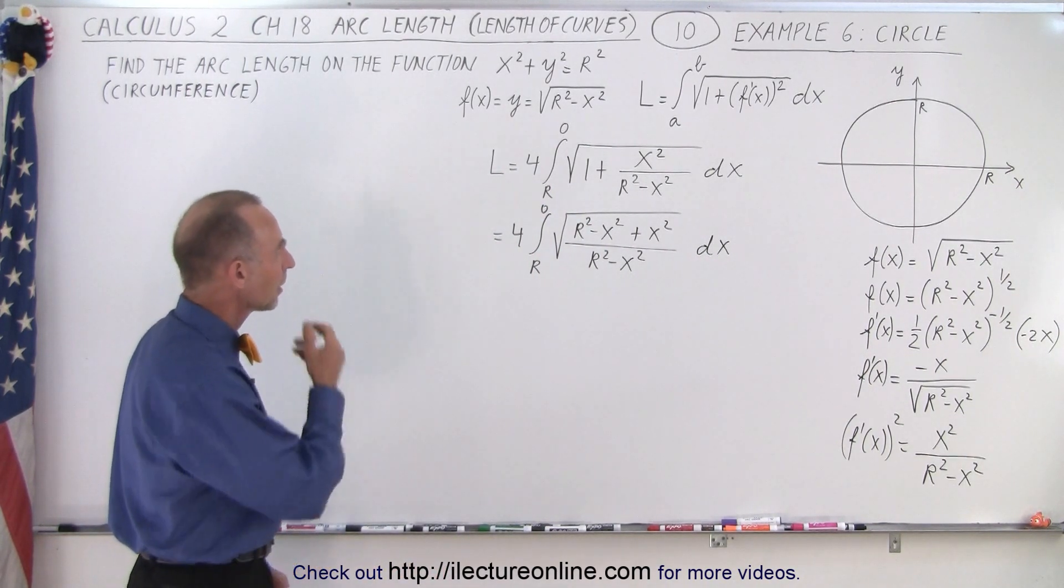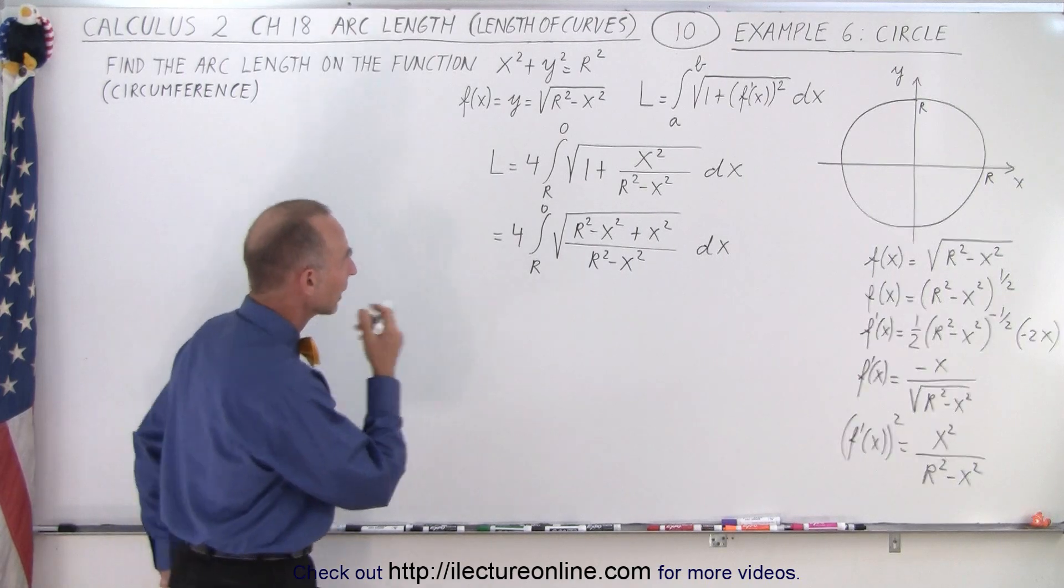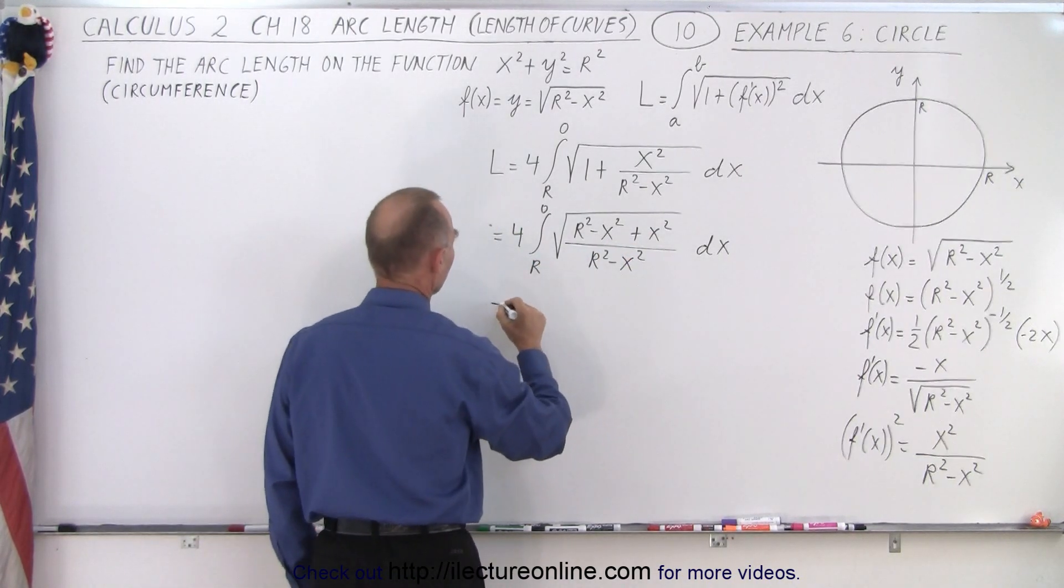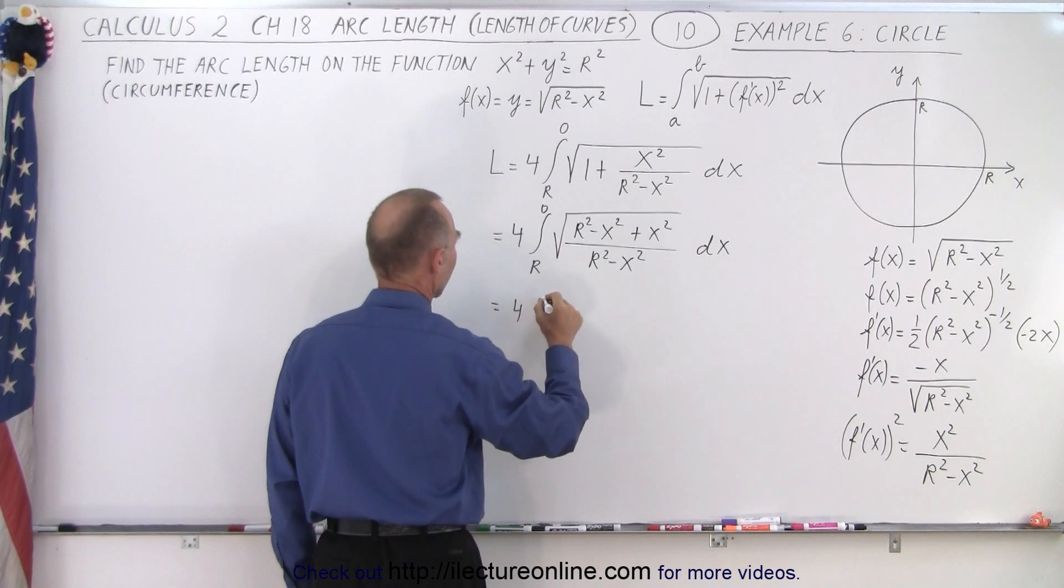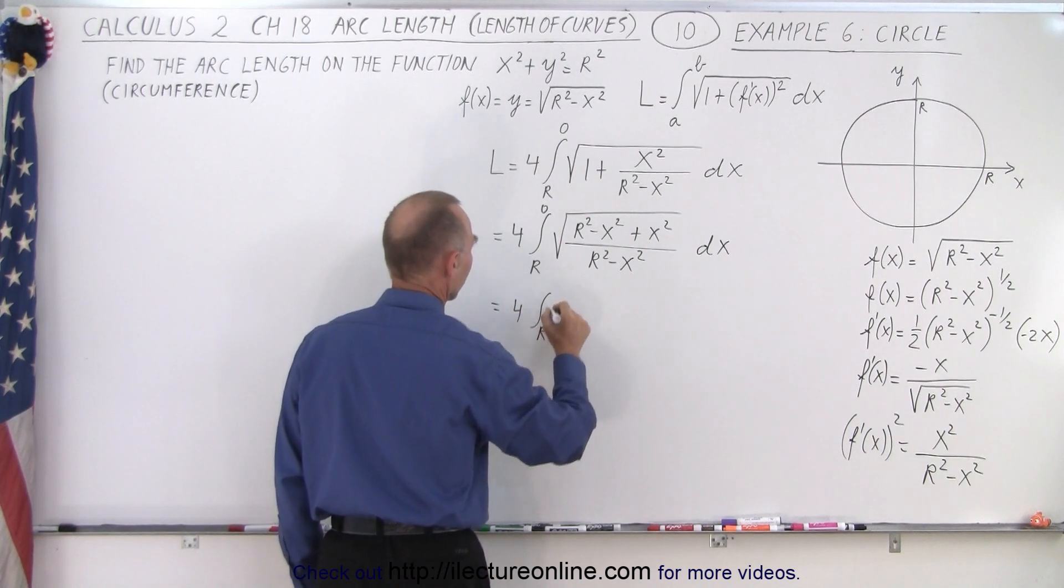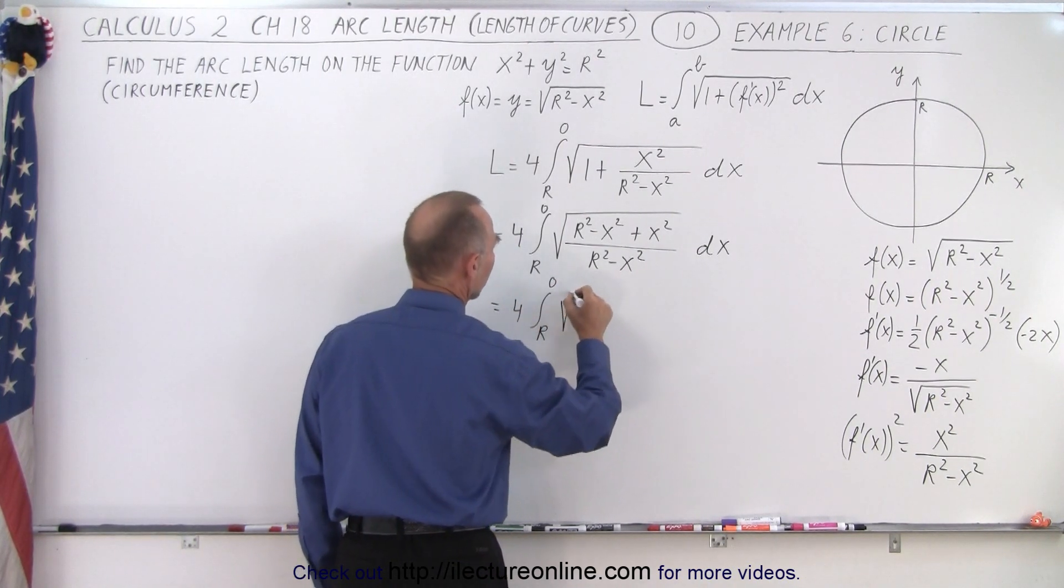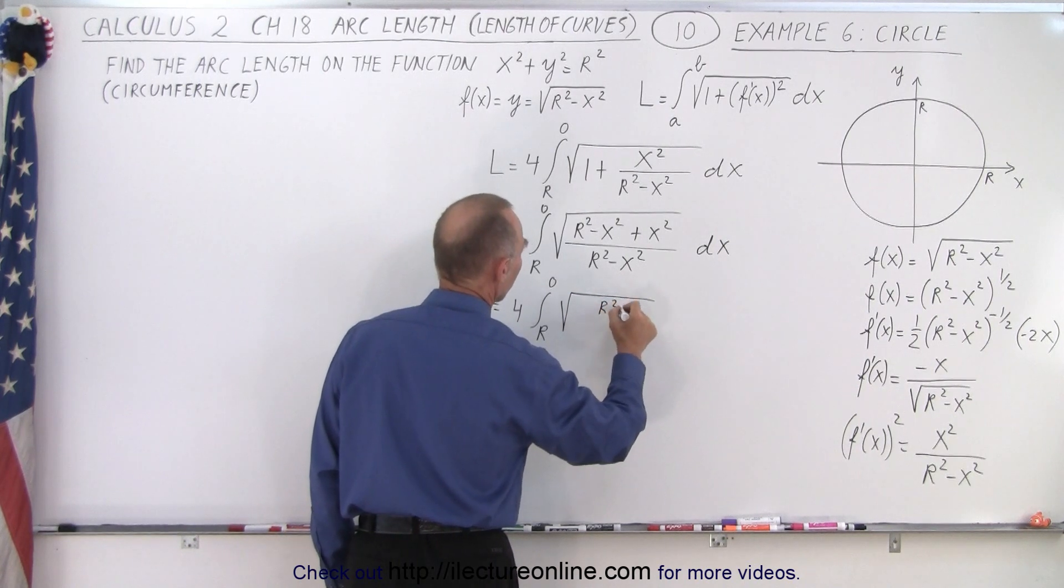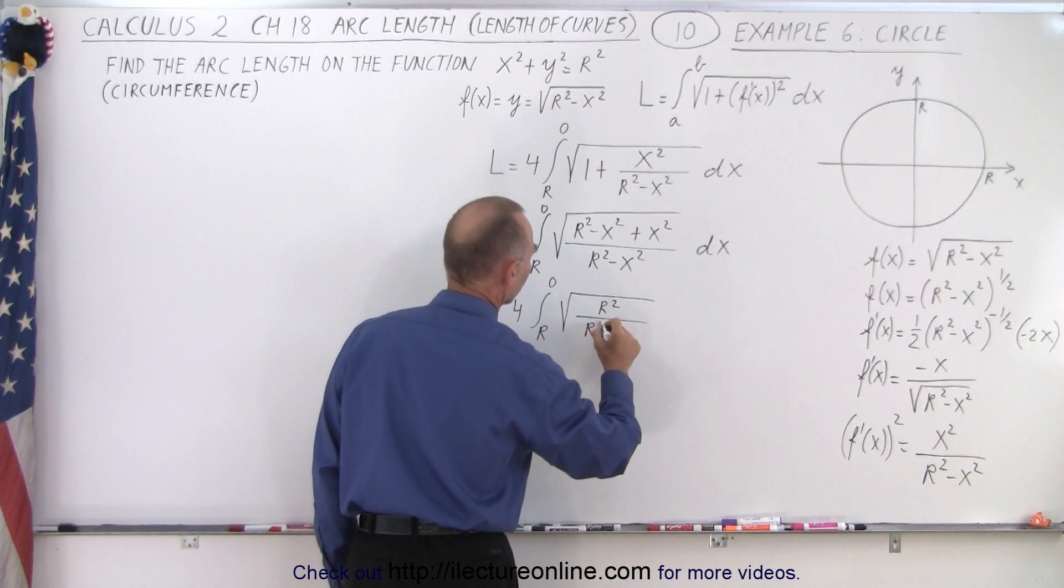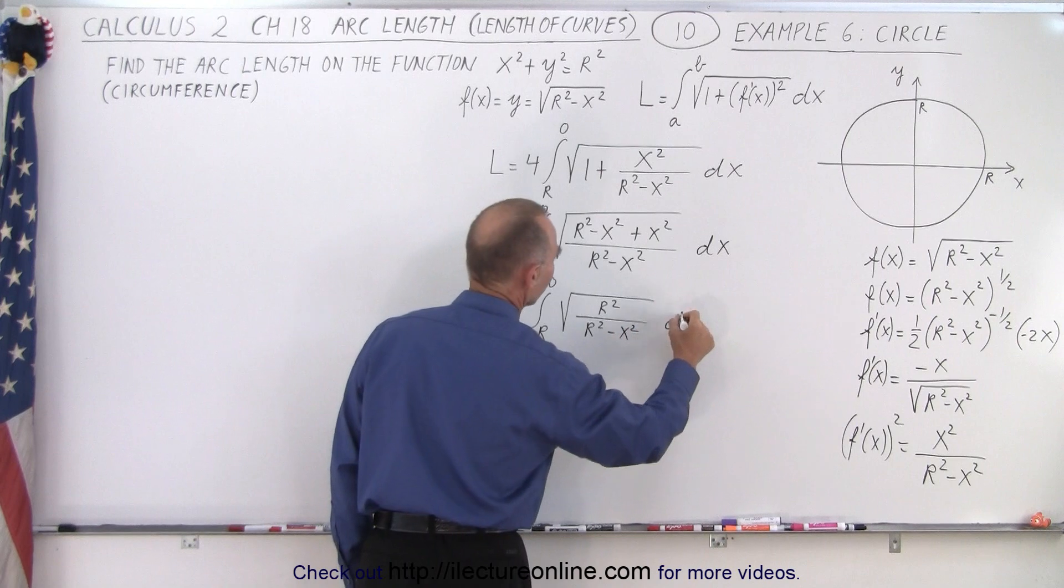So now let's see here, what can we do next? Well notice that the x's cancel out, so this becomes equal to 4 times the integral from r to 0 of the square root of r² divided by r² - x² times dx.